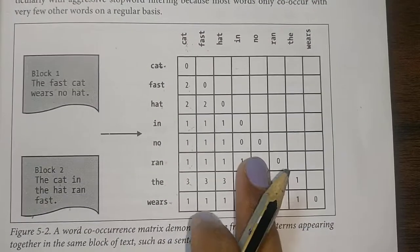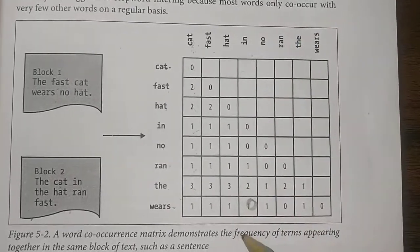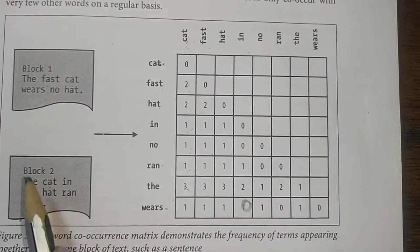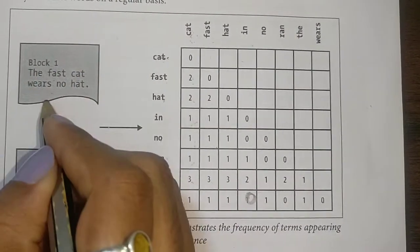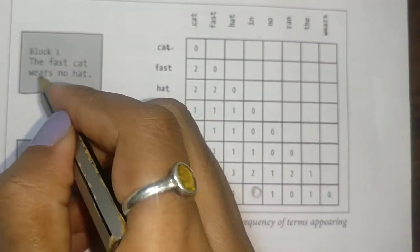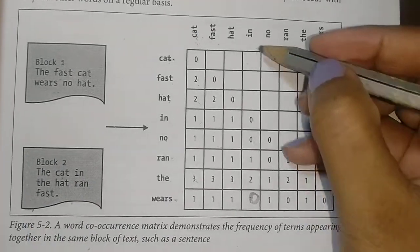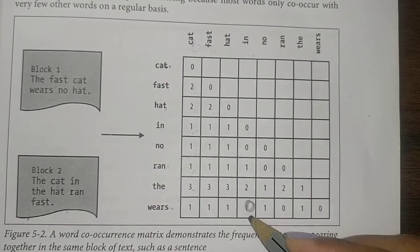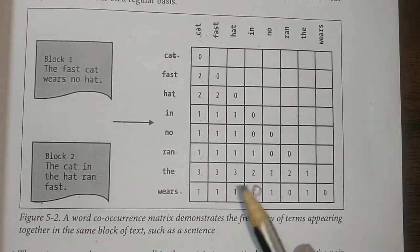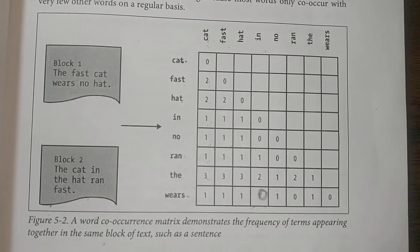I just want to point out one problem. If you look at 'in' and 'wears': the first sentence does not have 'in' but it has 'wears', whereas the second sentence has 'in' but does not have 'wears'. So in and wears, the value is supposed to be zero, whereas it is printed as one in the textbook. I hope you understood this. Thank you so much.